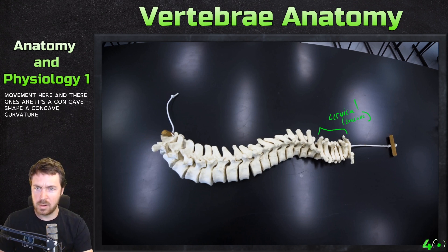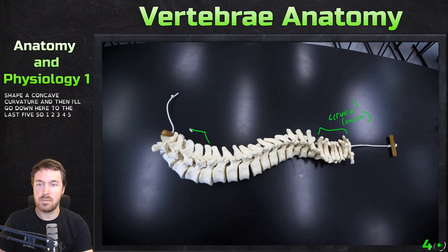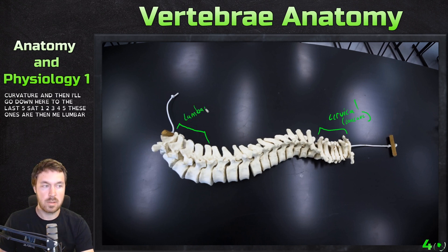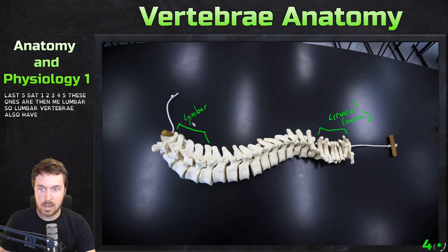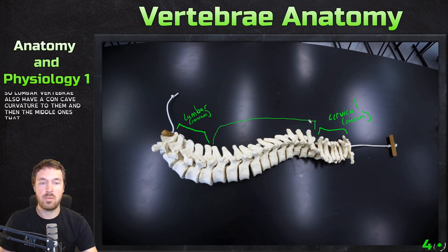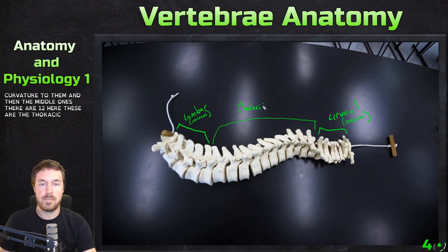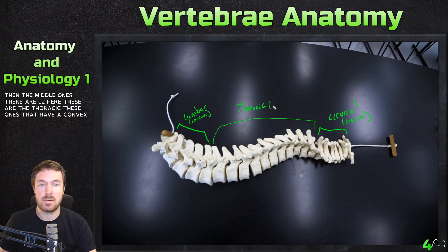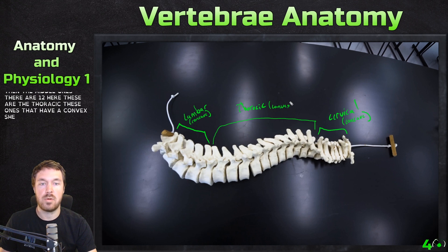Then the last five — the lumbar vertebrae — also have a concave curvature to them. And then the middle ones, there are 12 here — these are the thoracic vertebrae. These ones then have a convex shape to them.